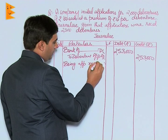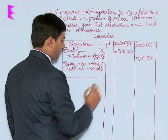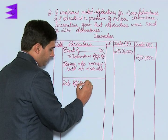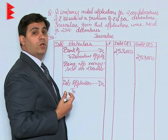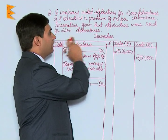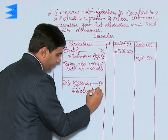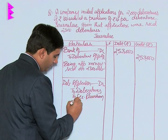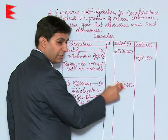This amount — debenture application account debited — would now be adjusted into debentures account, securities premium account, and the excess amount received for debentures not allotted would be refunded. The entry will be: debenture application to debentures account, to securities premium account, to bank. Debenture applications will have an amount of rupees 2,53,000.